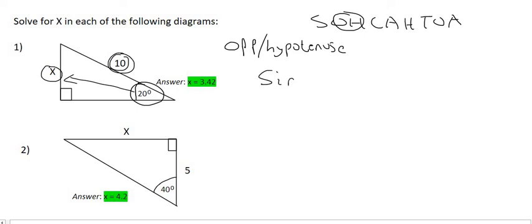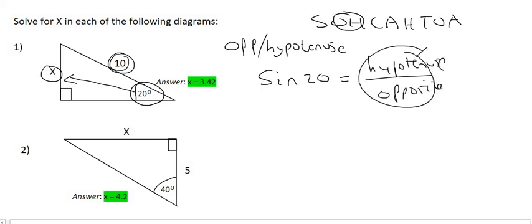So what we then do is we say that the sin of 20 is equal to the hypotenuse over the opposite. Now, if you did it like that, that is incorrect.